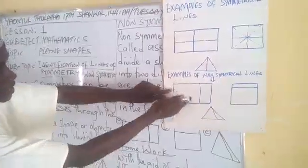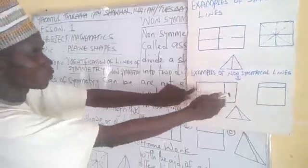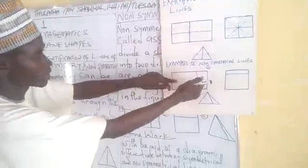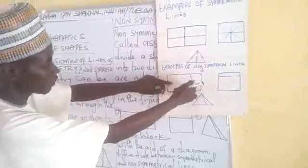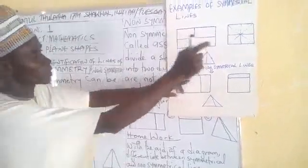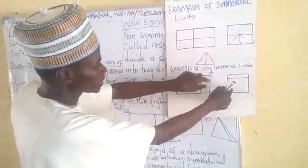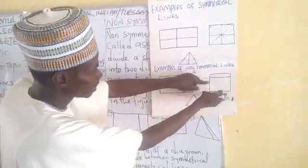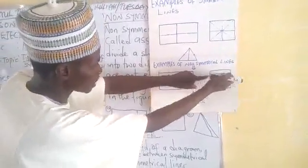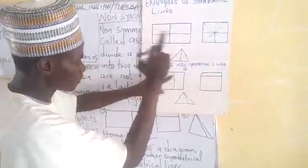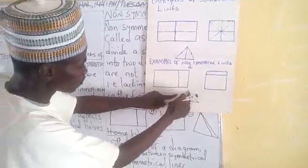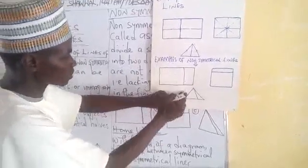This is the rectangle. It has been divided into two parts of different sizes — this size is larger than this. Therefore, this line is not a line of symmetry. The same with this square — it has been divided into two different parts where the lower portion is bigger than the upper. That line is not a line of symmetry. This is a triangle divided into two unequal parts, so this line is also not a line of symmetry.